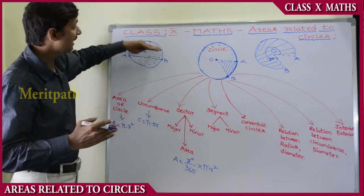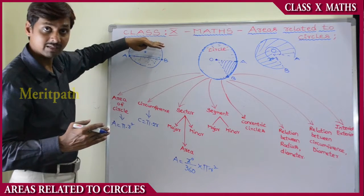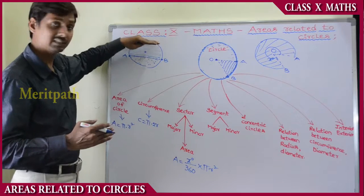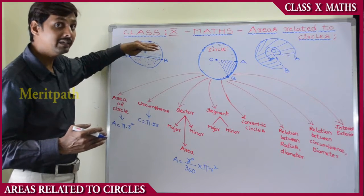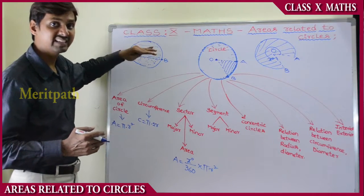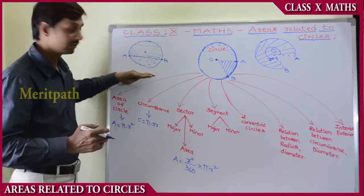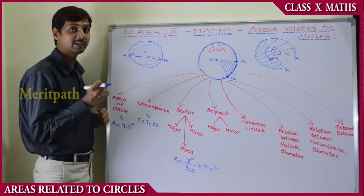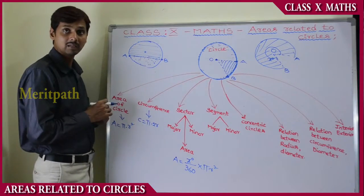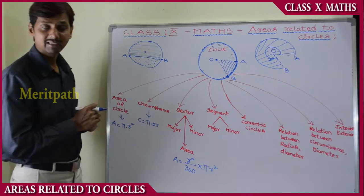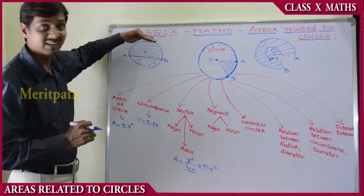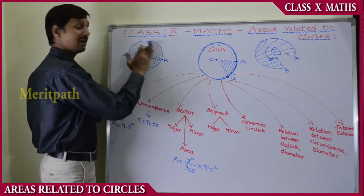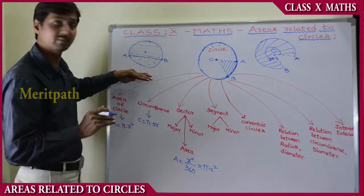The line segment divides the circle into two parts. The greater part according to area is called the major segment, and the smaller part according to area is called the minor segment. So we have a major segment and a minor segment.